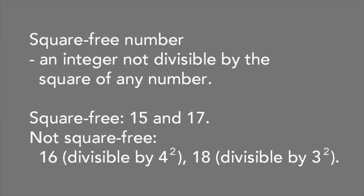We need to be aware of only a couple of concepts to understand the ABC conjecture. The first concept is that of square-free number. This is an integer that isn't divisible by the square of any number. For example, 15 and 17 are square-free, but 16, which is divisible by 4 squared, and 18, divisible by 3 squared, are not.